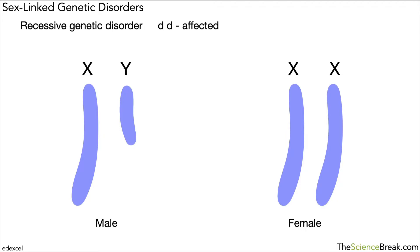Let's say small 'd' means the person is affected. Two capital 'D's mean the person is unaffected by the disorder — it's just an example, not a real one. A capital 'D' and a small 'd' means the person is a carrier: they're not affected but they do carry the recessive allele for that disorder.